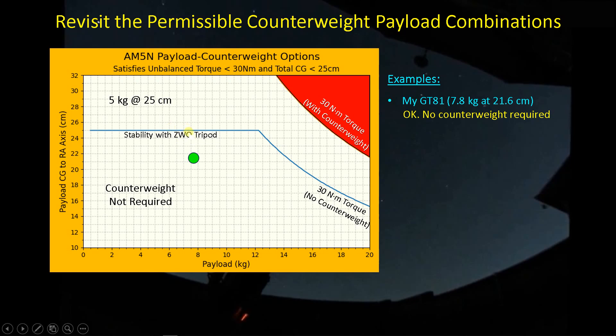In this case, I've got an 18 kilogram payload and somehow I've managed to put it at 16 centimeters above the RA axis. So that puts us right here. I'm close to the 30 newton meter unbalanced torque limit, but I'm not crossing the lines. So in this scenario, assuming I could actually put something together with a low enough CG, I could use this 18 kilogram payload and not use the counterweight if I wanted to.